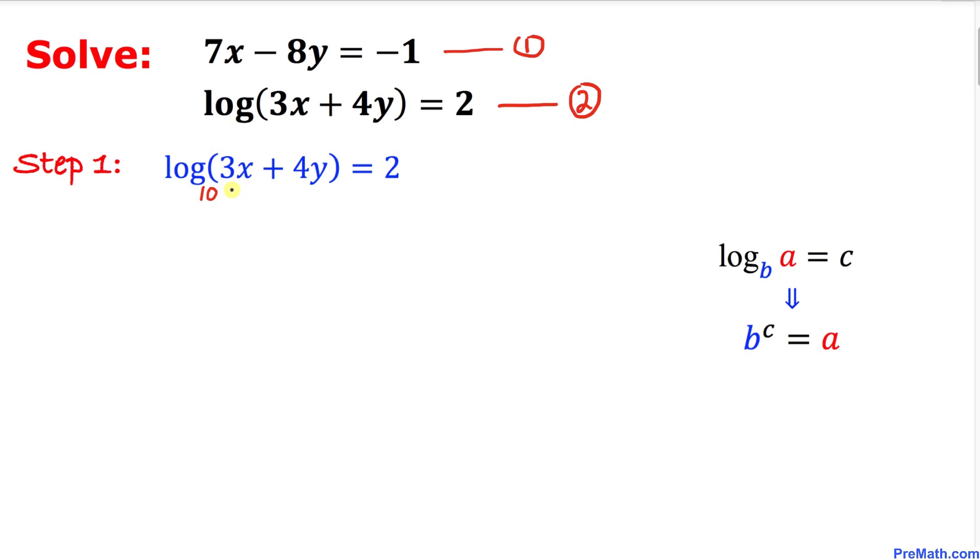Now let's convert this logarithmic form into an exponential form using this well-known rule. According to this rule, we're going to have base 10, then power 2 equals this argument. That means it's going to become 3x plus 4y.